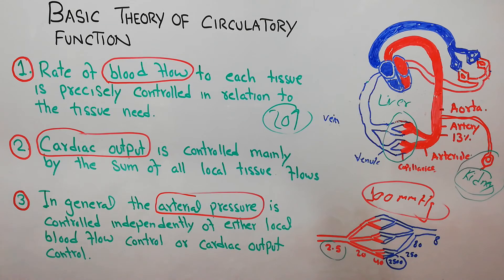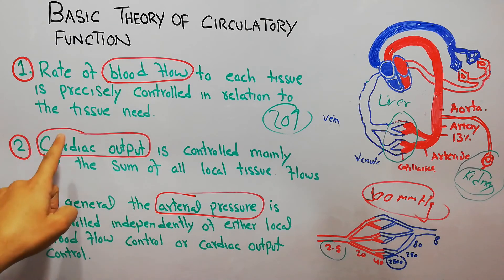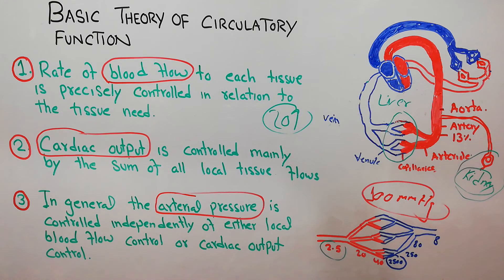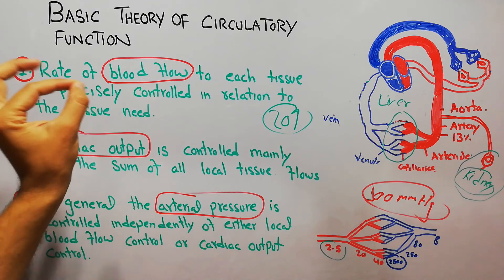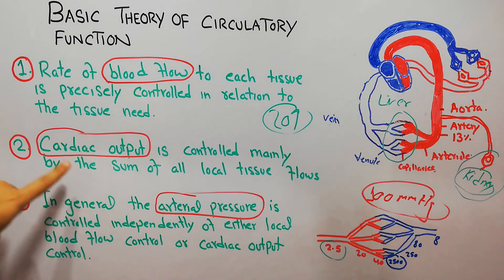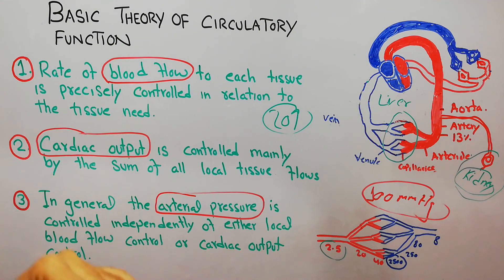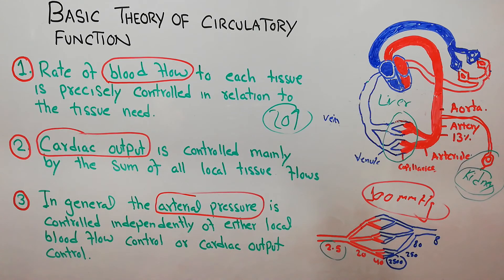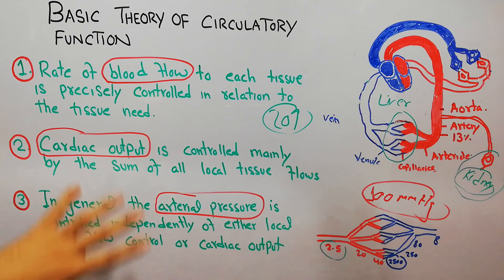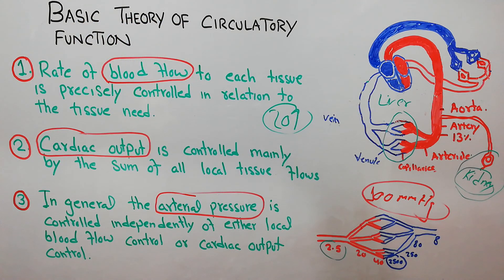So these are the three rules of the basic theory of circulatory function. The first rule is about blood flow — if a tissue needs more blood, blood flow to that specific tissue increases according to its need. The second rule says cardiac output is the sum of all blood flows, so a change in a single tissue's flow affects overall cardiac output. The third rule says arterial pressure is not dependent on blood flow or cardiac output. Thanks for watching the video.